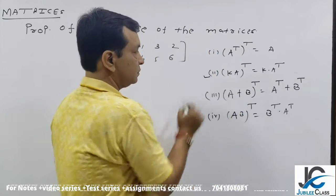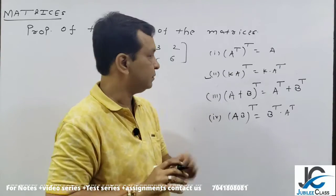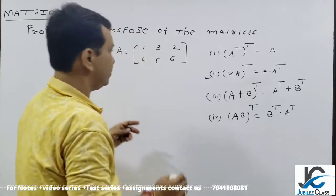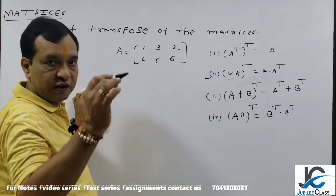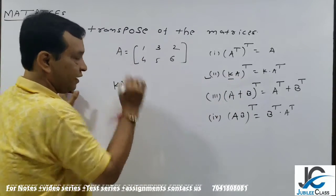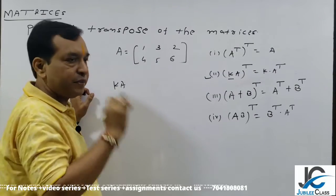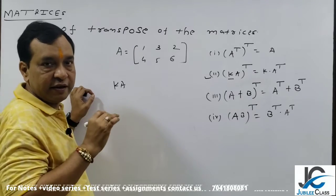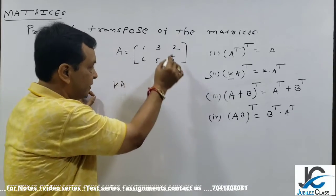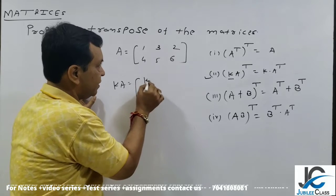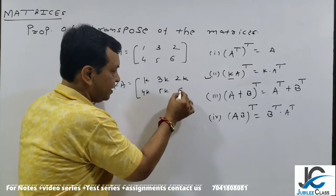Second rule: K into A means matrix calculation. First, we take K into A. What is the meaning of this? The meaning is very simple. K is multiplied with all the terms. Yes or no? So K multiplied with each element: K, 3K, 2K, 4K, 5K and 6K. Is that clear?